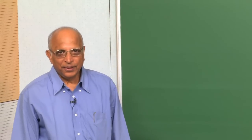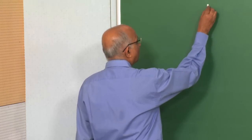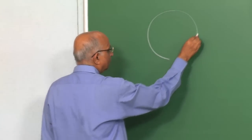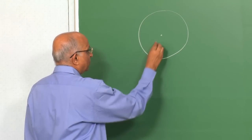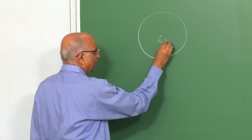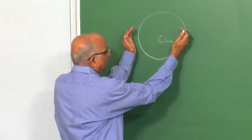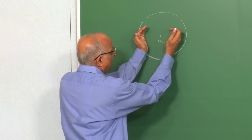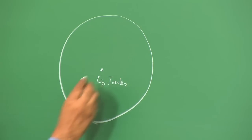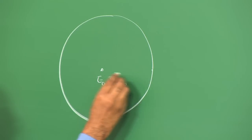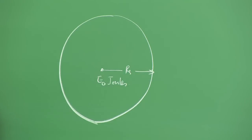Good morning. In the last class we were looking at the formation of a spherical blast wave from an explosion which released E₀ joules of energy. We are looking at a spherical blast wave which forms and keeps propagating outward. This lead blast wave at time t is at a distance Rs from the source of energy release.